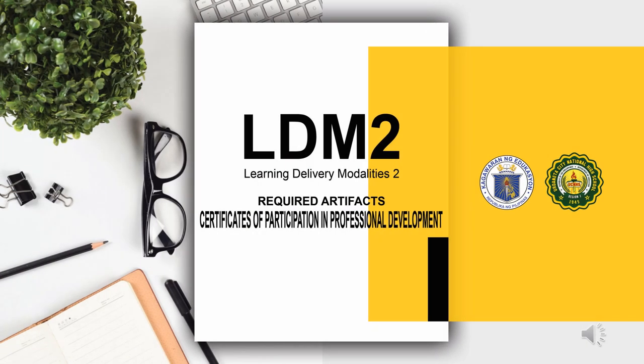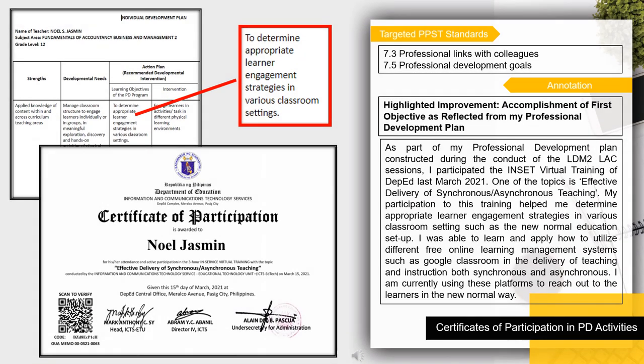The following are the artifacts on certificates of participation in professional development activities as a required artifact. The targeted PPST standards are 7.3 Professional links with colleagues and 7.5 Professional development goals. In this artifact, I highlighted my accomplishment of the first objective reflected on my professional development plan, constructed during the LDM LAC sessions.